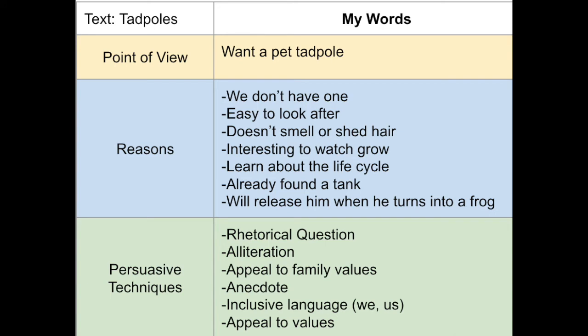So the point of view was that he wants a pet tadpole. He had clear reasons: we don't have one; they're easy to look after; it doesn't smell or shed; it's interesting to watch; I can learn from it; I've already got the equipment. And then he used these persuasive techniques to try and convince me: rhetorical questions, alliteration, he appealed to my family values, he used an anecdote, he used inclusive language, and he appealed to my values that I wanted him to have as a son. There is a difference between reasons and persuasive techniques.